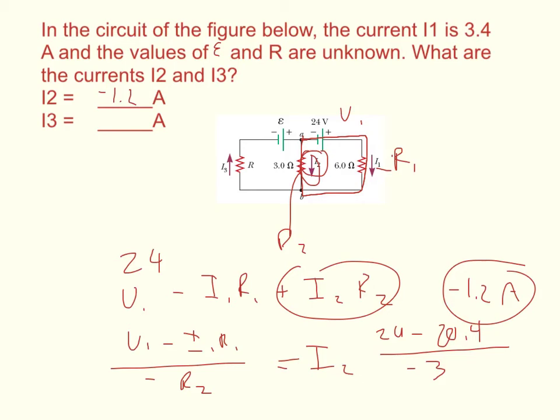To find I3, the arrows say we have this current and this current going into it, so we'd say I3 is equal to I1 plus I2, where I2 is a negative number.